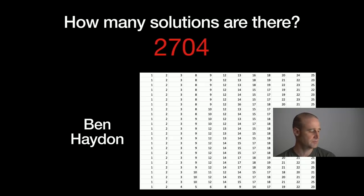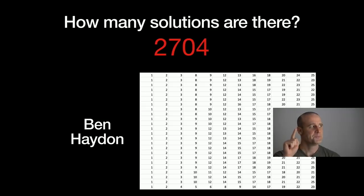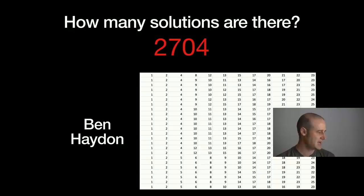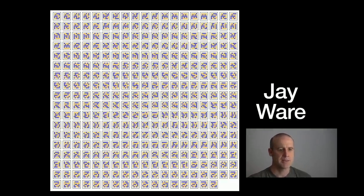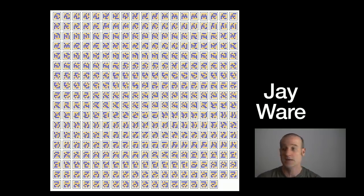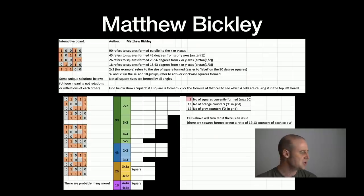There were 2704 valid solutions people could have sent in, and several people found all of them. Ben Hayden found all 2704. That's not taking out ones that are symmetric or rotated — so there are solutions we'd consider equivalent. If you narrow it down to just the unique ones, there are 340, which Jay has done and sent in a nice diagram.